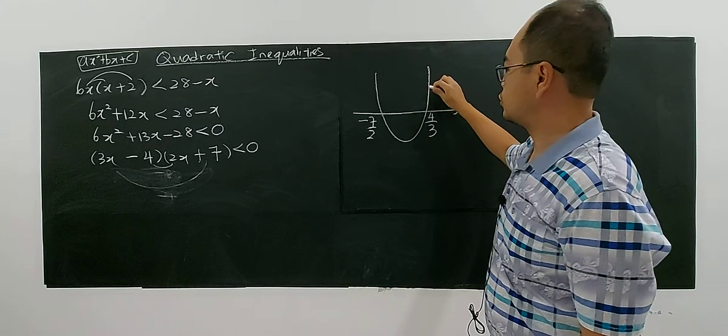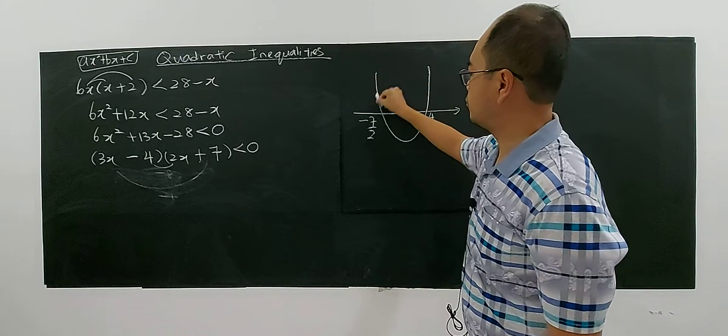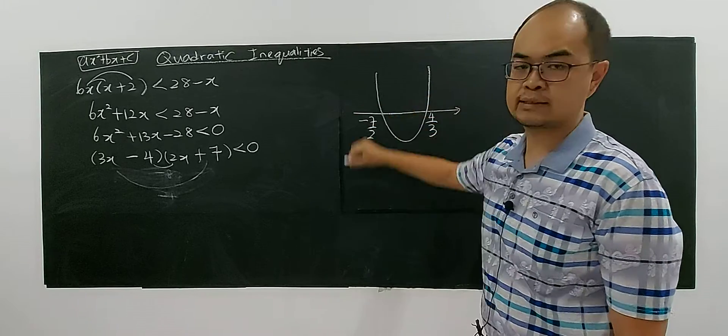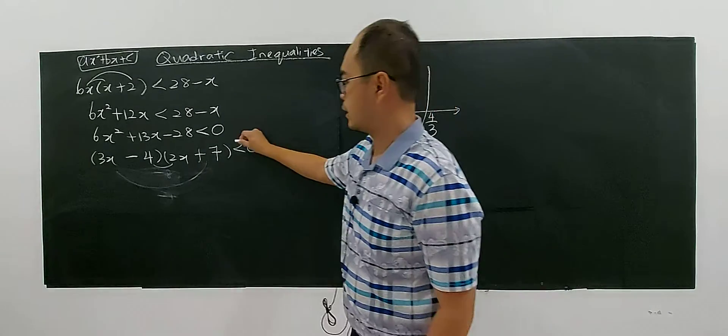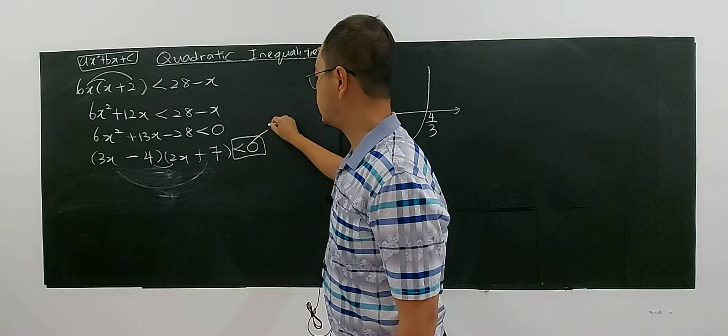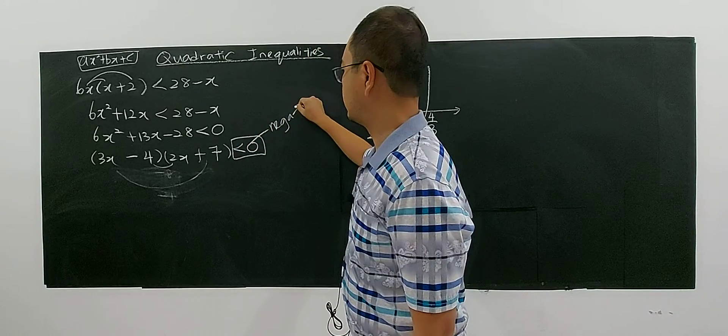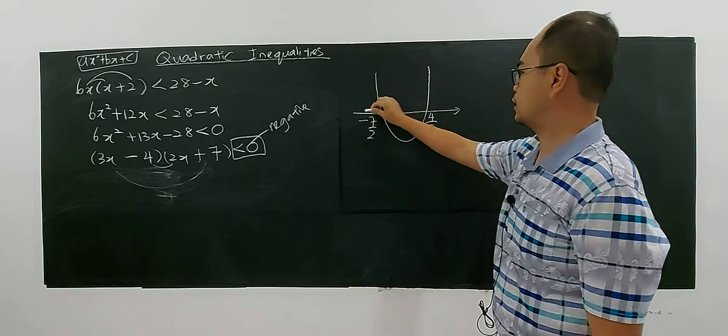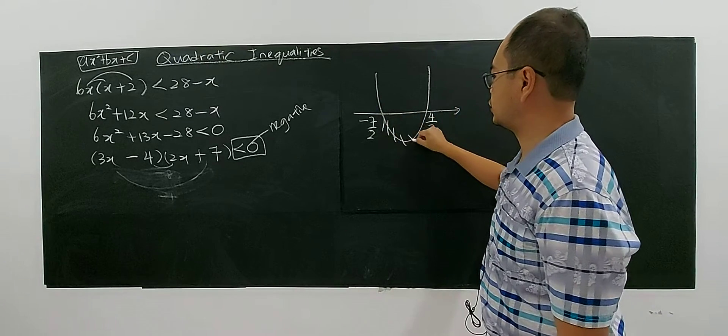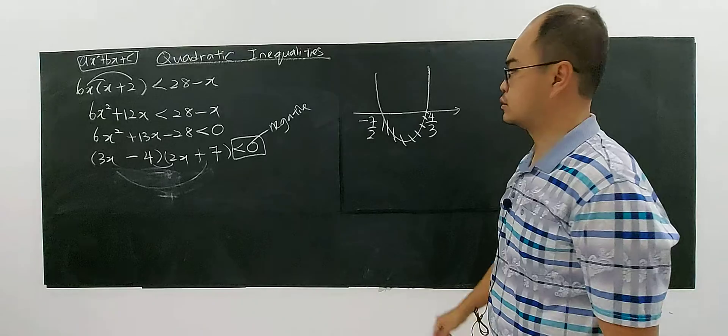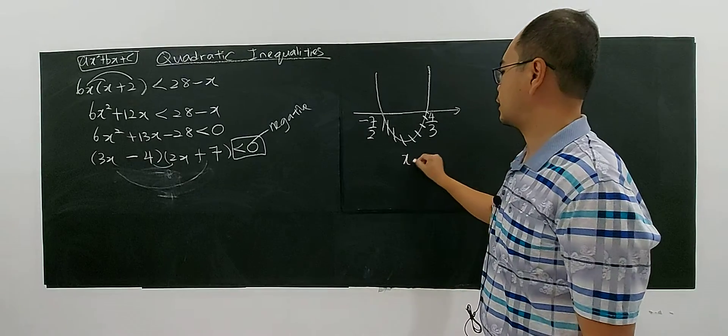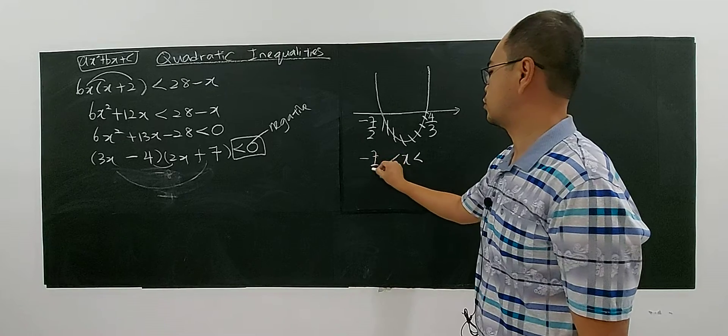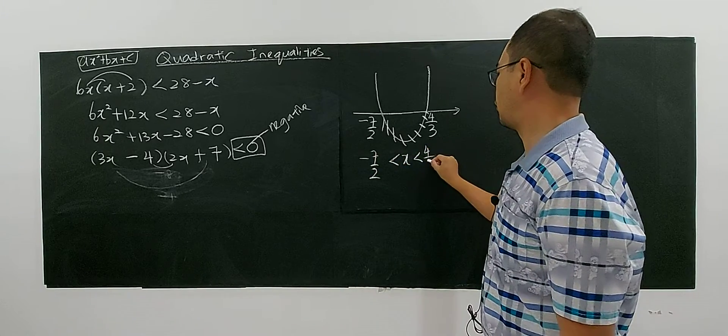You will choose either the positive graph here or the one below the x-axis. It's based on the sign here. Less than 0 means negative. Negative means below the axis. So this is the region where x is between negative 7 over 2 and 4 over 3.